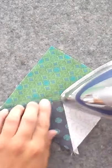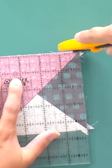Press the seams open to reveal four double pinwheels. Trim the blocks to one half inch larger than the finished size.